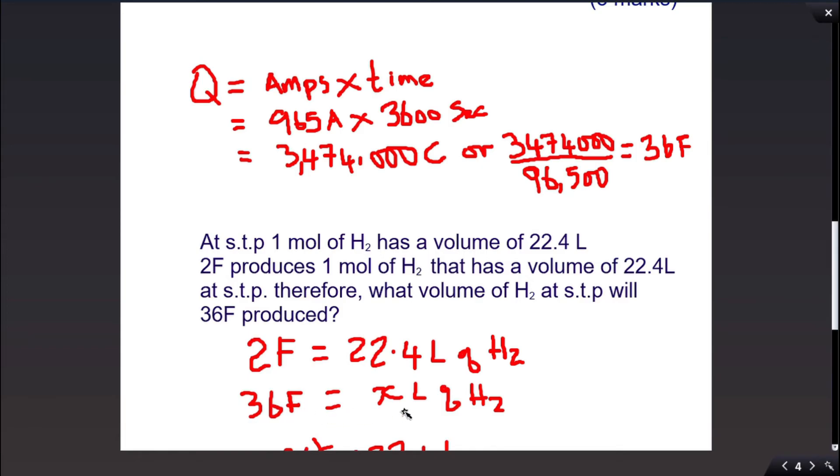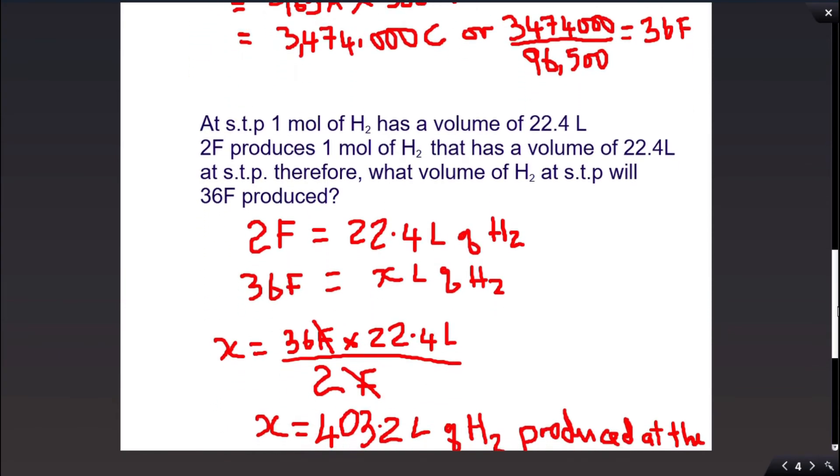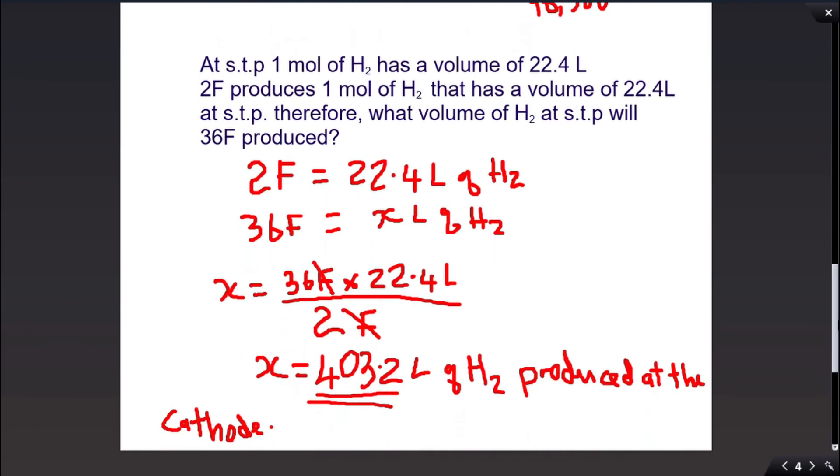How many liters of hydrogen gas? We don't know, so we call that x. Then we cross multiply and solve for x. Faradays cancel Faradays, so x equals 403.2 liters of hydrogen produced at the cathode. Let us look at the next question.